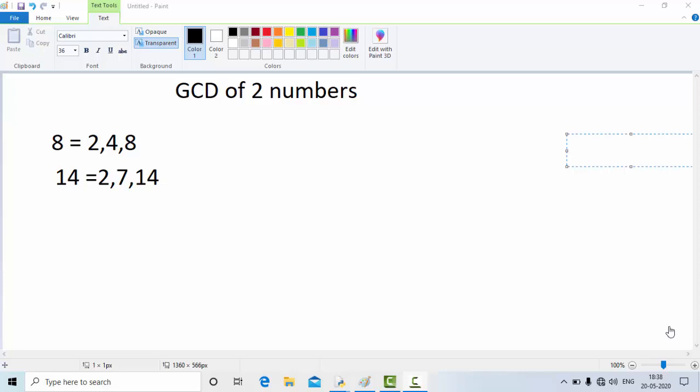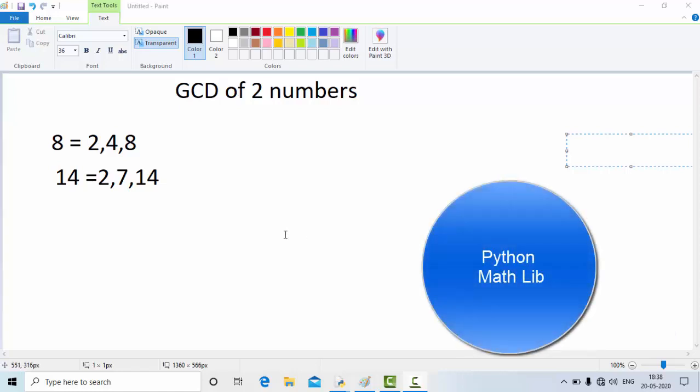Hey guys, welcome to KB Tutorials. In this tutorial, we are going to see how to calculate the GCD of two numbers using Python math library. So first of all, what is a GCD of numbers? GCD is nothing but the greatest common divisor of the numbers.